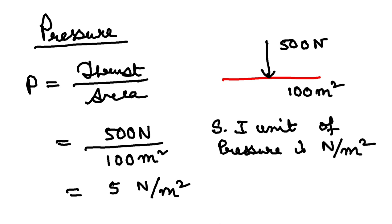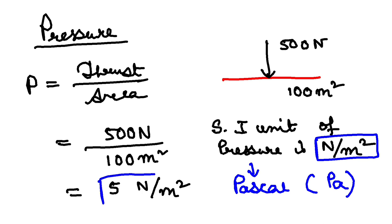However, there is a trick. We don't normally use this. Rather, in memory of the scientist Blaise Pascal who discovered this concept, we write the SI unit of pressure as Pascal, symbolically Pa. So instead of writing 5 Newton per meter square, we are going to write 5 Pascal.